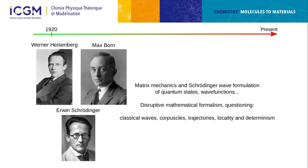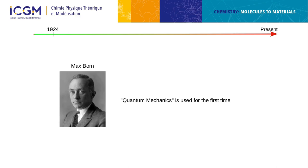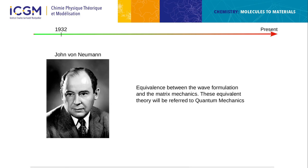It's only 15 years later, in 1920, that quantum mechanics started to be formalized as a mathematical formulation. Heisenberg and Bohr did the matrix mechanics formulation, and Schrödinger did the wave formulation. These formulations were disruptive compared to classical formalism because they questioned classical waves, corpuscles, the notion of trajectory, locality, and determinism. Max Born then used the term 'quantum mechanics' in 1924. John von Neumann later merged the two theories.